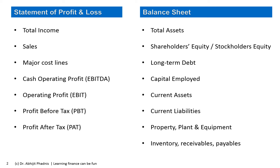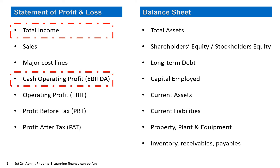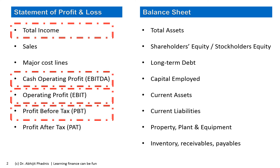For calculating profitability ratios I am going to use the same framework: the statement of profit and loss and the balance sheet. When it comes to profitability ratios, what really matters is the statement of profit and loss. We put a measure of profit in the numerator and the measure of income — total income — in the denominator. In the numerator we can use cash operating profit, operating profit, profit before tax, or profit after tax, depending on the level at which we want to calculate the ratio.